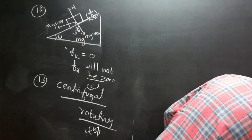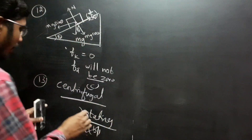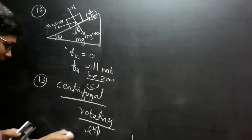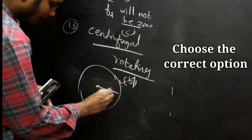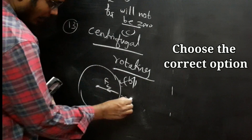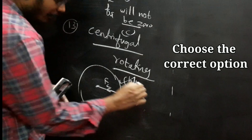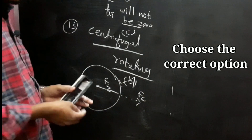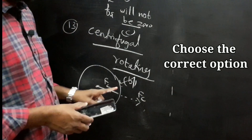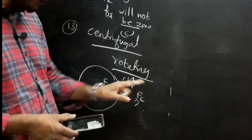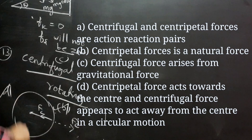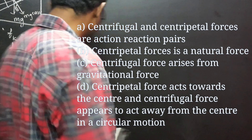Question 14: Centripetal and centrifugal forces in circular motion. Centripetal force acts towards the center, centrifugal acts away from the center. The answer is option D.